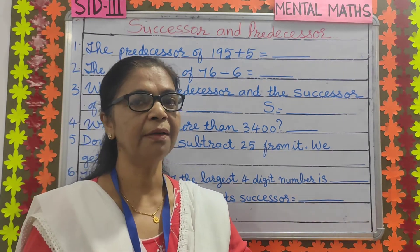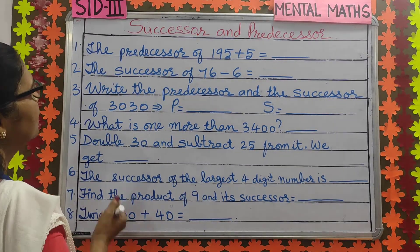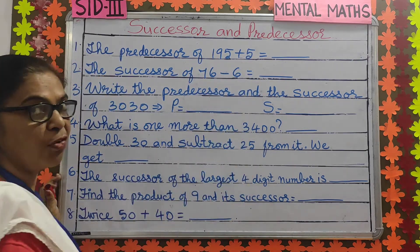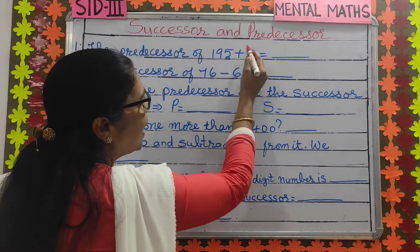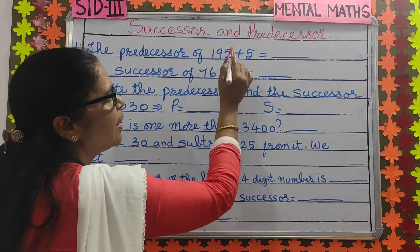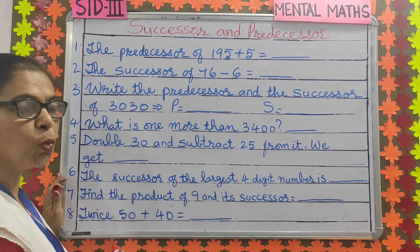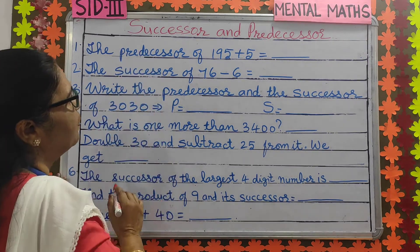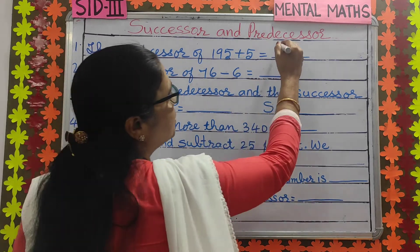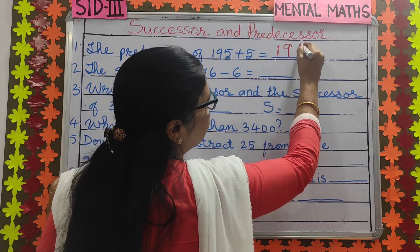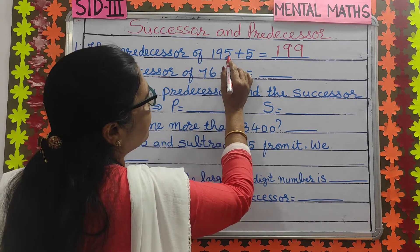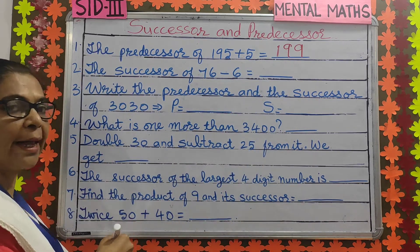Now let's begin. Number 1: the predecessor of 195 plus 5. First, you have to add and find the number. 195 plus 5 is 200. And the predecessor of 200 — the number just before 200 — is 199. So the predecessor of 195 plus 5 is 199.